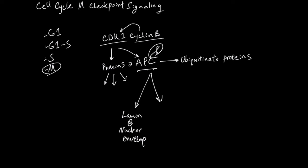The second target is securin, and securin is a protein that binds sister chromatids. So here is chromosome one, this is the DNA.